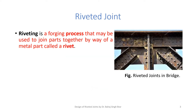Riveting is a forging process that may be used to join different parts together by way of a metal part called a rivet, as explained in the previous slide. The figure shows the structure of a bridge made up of riveted joints.